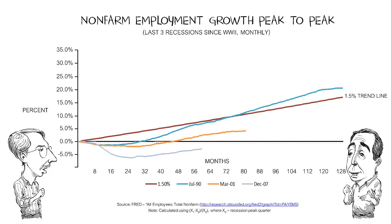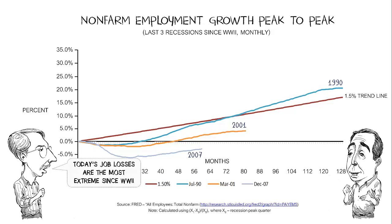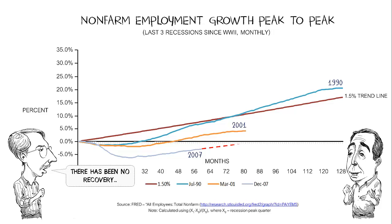With the 1990 event, we didn't get back to trend until 72 months into it — six, seven, or eight years. The 2001 was the same — never made up the gap. And then where we are today, the job loss is the most extreme since World War II, that's for sure. But the critical thing is no recovery. It looks like it's going to take seven or eight years just to get back to where we were before.